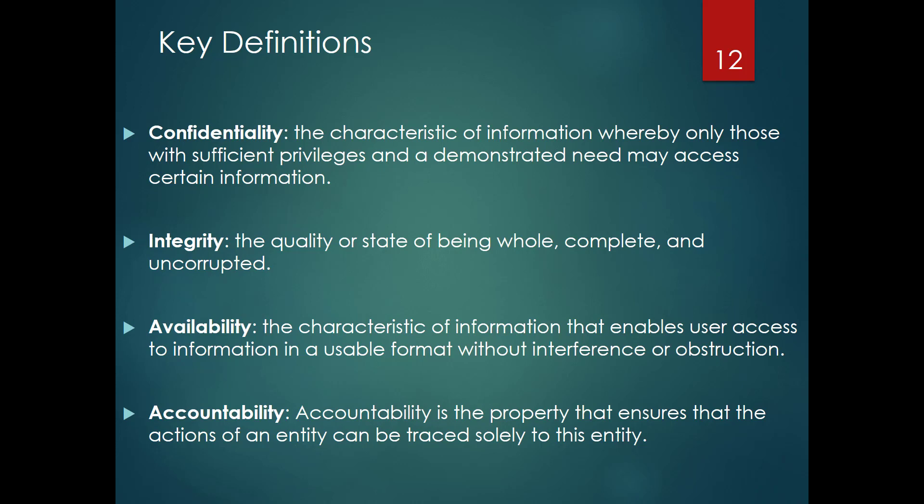Integrity is whether you can change the information — keeping it whole, complete, and uncorrupted. So if you want to think in action verbs: confidentiality is 'can I read it?', integrity is 'can I change it?', and availability is 'can I get to it?' Availability is the characteristic that people can access information in a usable format without interference or obstruction. The final characteristic is accountability — if someone performs an action, we can trace it back to that person. Having accountability allows you to protect your information systems because you can account for who did what to whom.